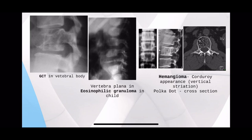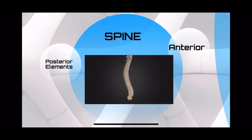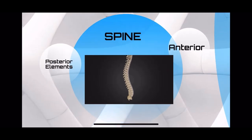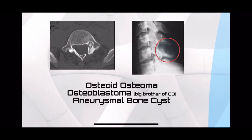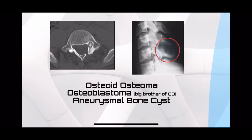Hemangioma is quite different. You see corduroy vertebra — there are vertical striations which, if seen in CT cross-section, will appear as a polka-dot appearance. If you see lesions in the posterior elements of the spine, think of osteoid osteoma, osteoblastoma (the big brother of osteoid osteoma), or aneurysmal bone cysts. All of these appear as a cyst in the spinous process or other posterior elements.